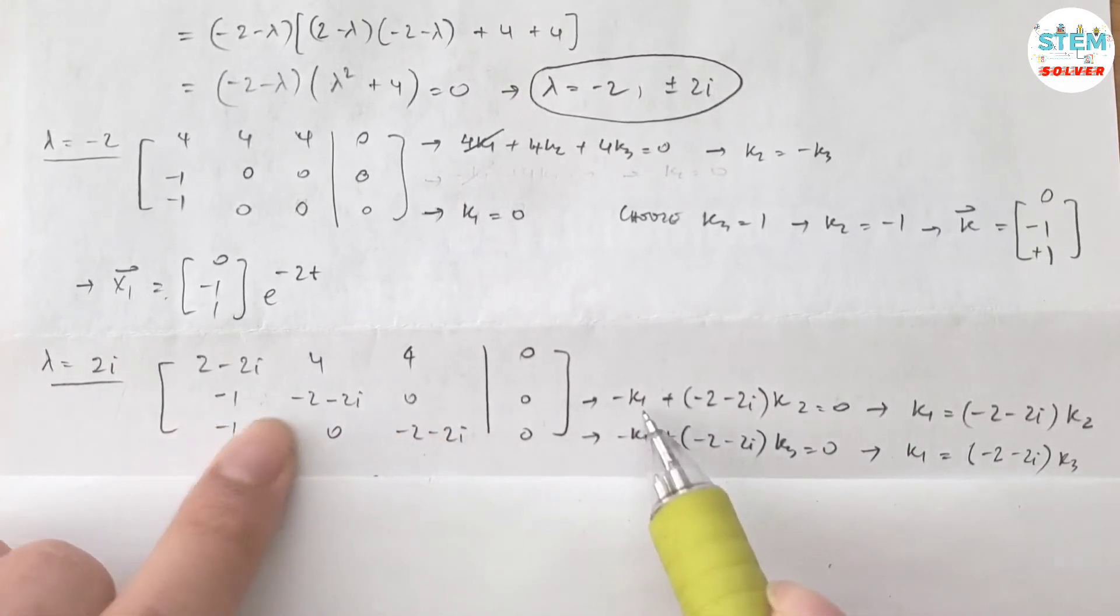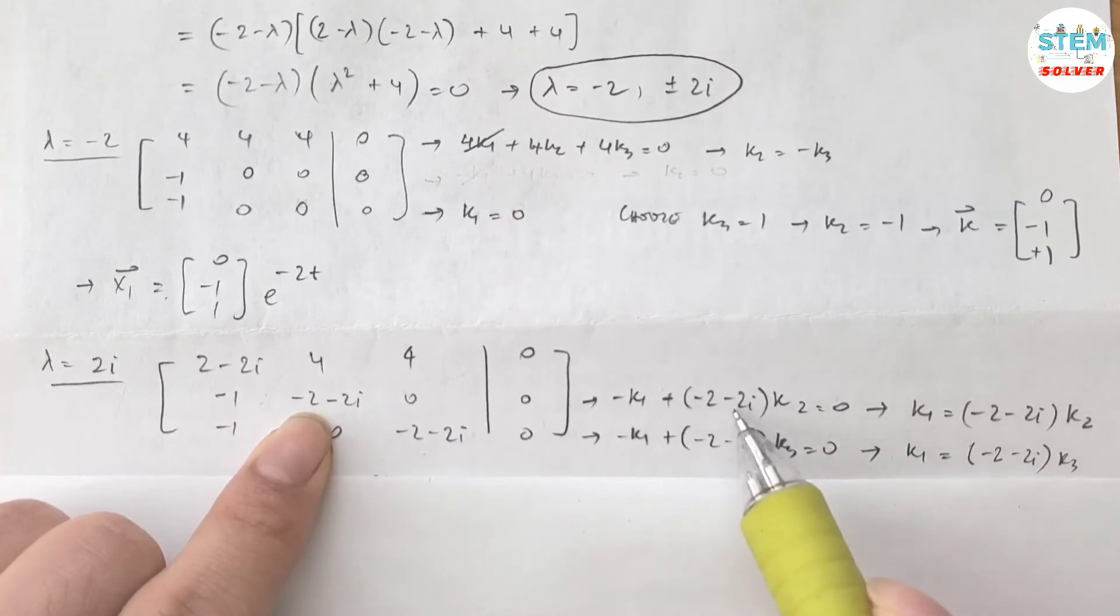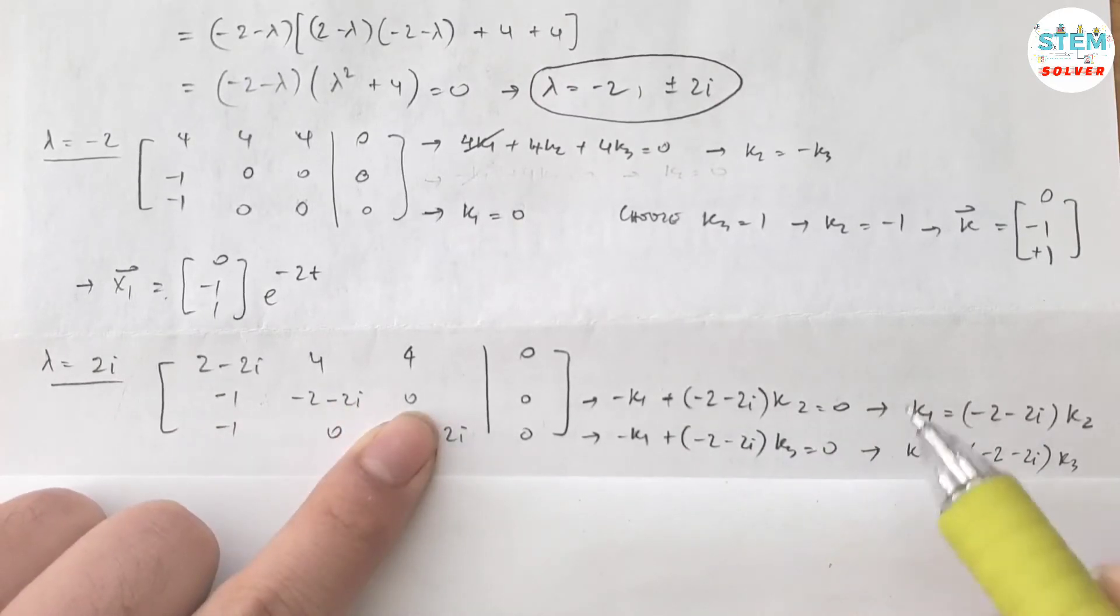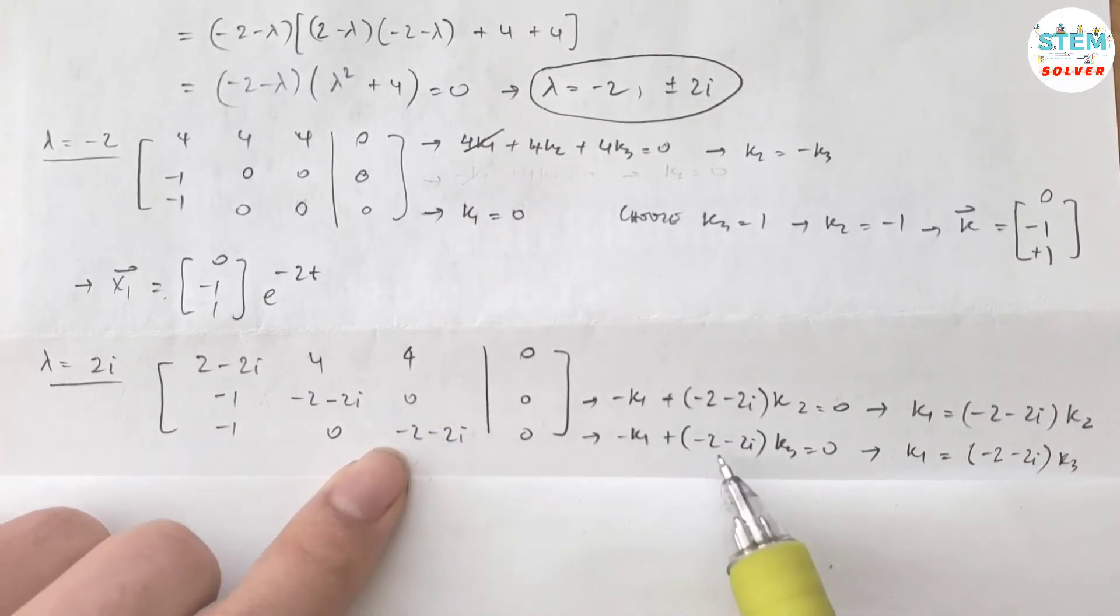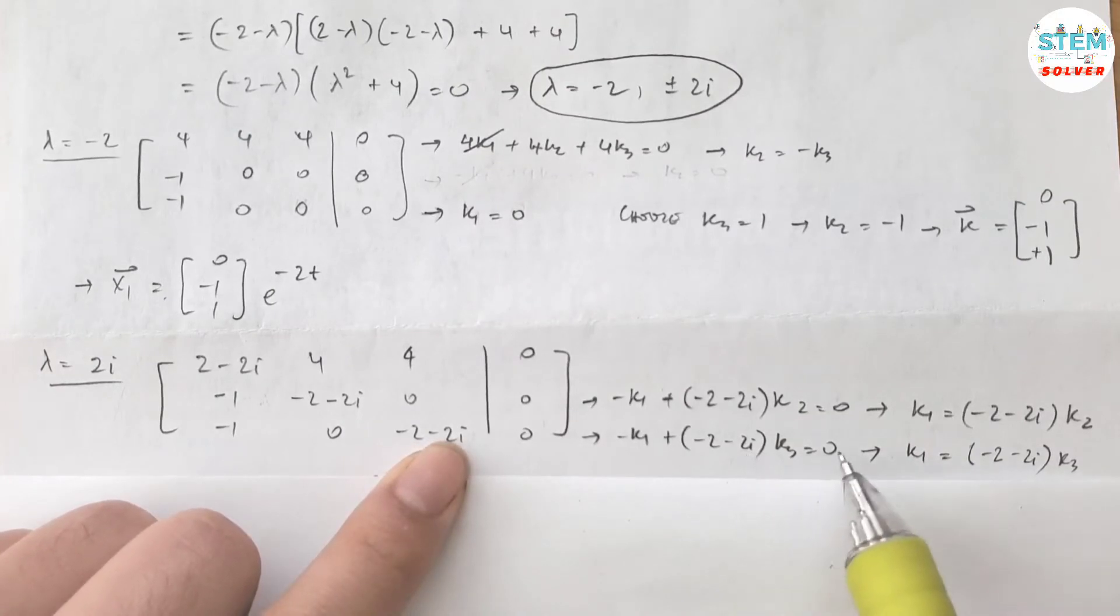I have negative k1 plus (negative 2 minus 2i) times k2 equals 0. Solve for k1, I got (negative 2 minus 2i) times k2. Use the third equation, I have negative k1 plus (negative 2 minus 2i) k3 equals 0, solve for k1, I got this one.